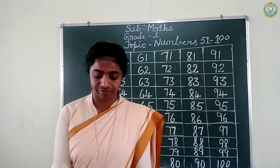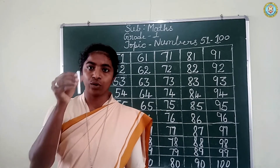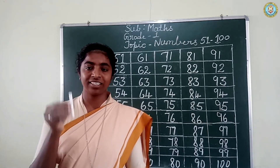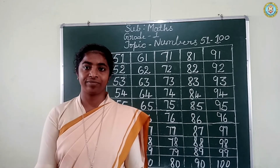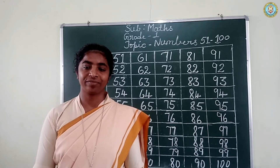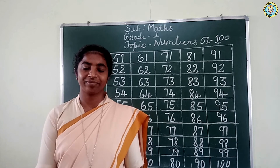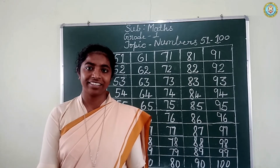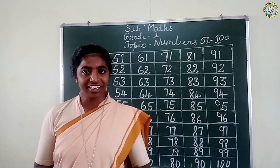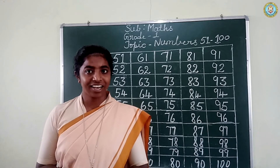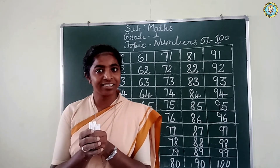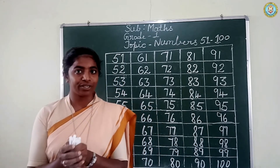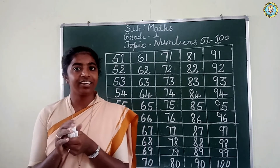Now look at me. 1, 2, 3, 4, 5, 6, 7, 8, 9, 10. What did I do children? I was counting. Very good. Why do we need numbers? We need numbers to count — the things, the persons, anything. We need numbers.